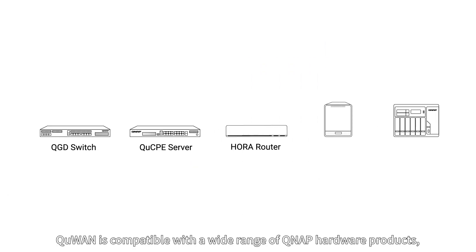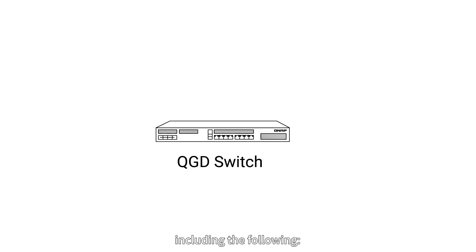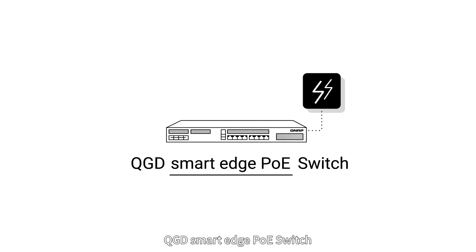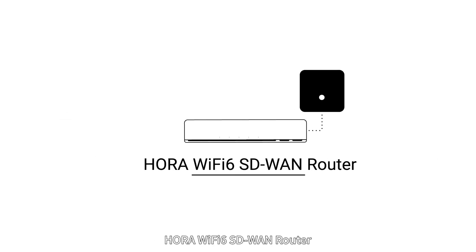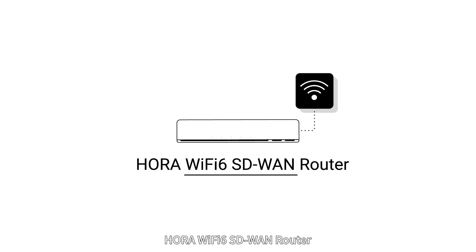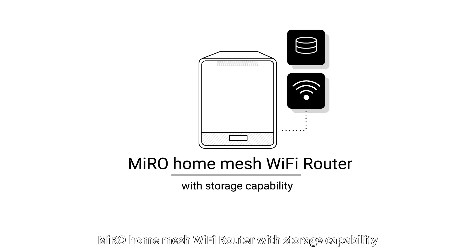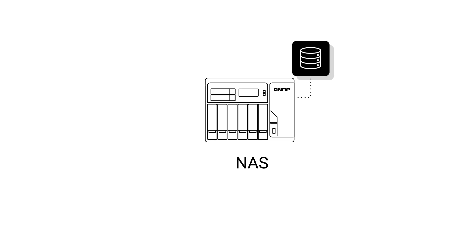Q-WAN is compatible with a wide range of QNAP hardware products, including the following: QGD SmartEdge PoE Switch, QCPE On-Premise Edge Server, Hora Wi-Fi 6 SD-WAN Router, Miro HomeMesh Wi-Fi Router with Storage Capability, and NAS.